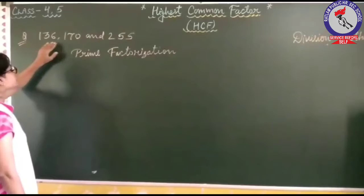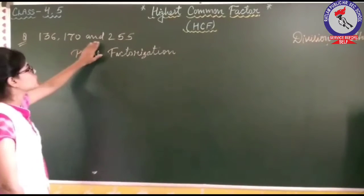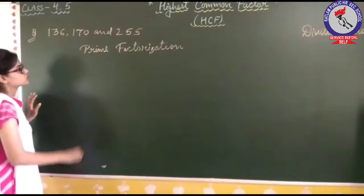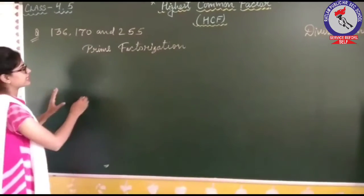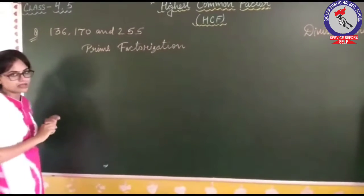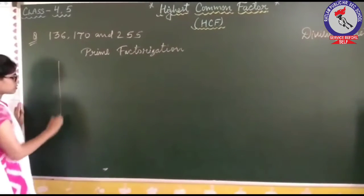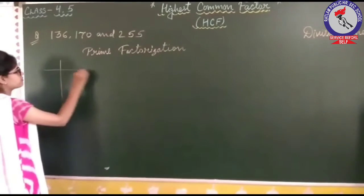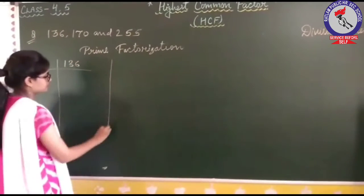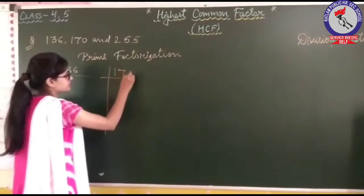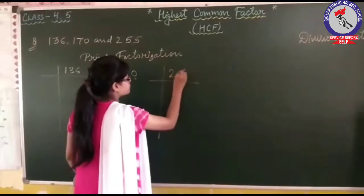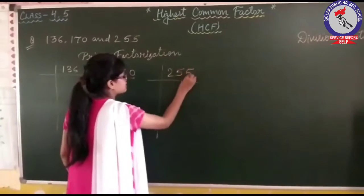Here we have the numbers 136, 170, and 255. We will find the HCF of these three numbers. We will factorize all three of these numbers individually.